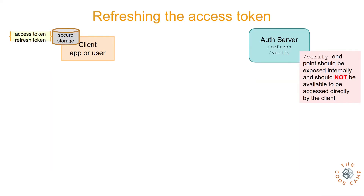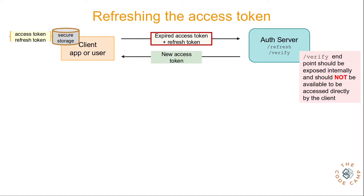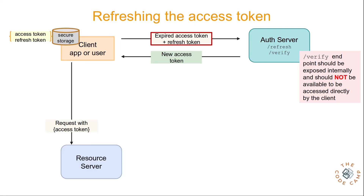To generate a new access token, a new endpoint is created on the server — something like /refresh — and we send both the expired access token and the refresh token to this endpoint. The auth server validates both tokens, and if everything is fine, a new access token is returned to the client. The client replaces the old access token with the new one in safe storage, and the rest of the flow remains the same.